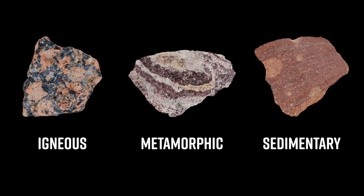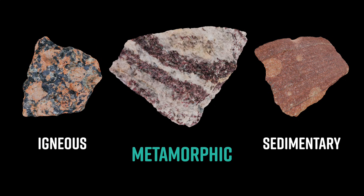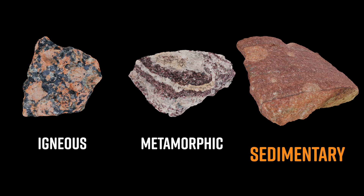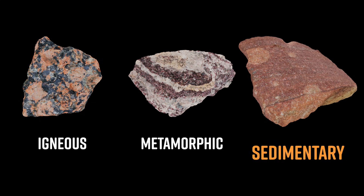We also have metamorphic rocks like this piece of gneiss here, which was an existing rock that was exposed to periods of intense heat and pressure over time. And then finally, we have sedimentary rocks like this sandstone, which formed when grains of sand were compacted and cemented over a long period of time, forming this rock.